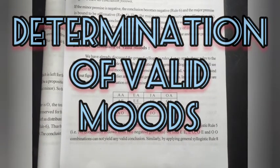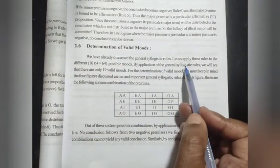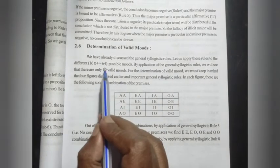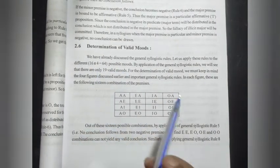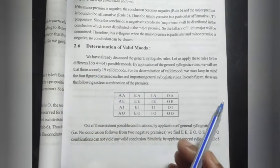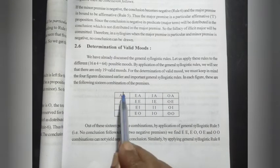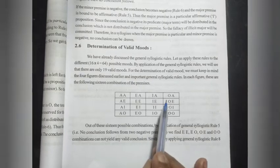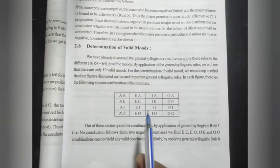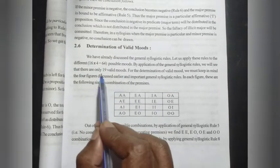Now, determination of valid modes. We have already discussed the general syllogistic rules. Let us apply these rules to the different possible modes. There are 64 possible modes — that is 16 multiplied by 4 equals 64 possible modes. For each premise pair there are 4 choices: A, E, I, O — giving 16 combinations, and multiplied by 4 figures equals 64.